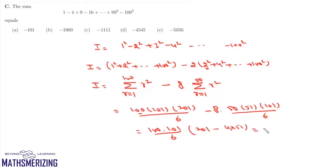So this value will be 10100 into minus 3 upon 6, and it will be minus 5050, which is your option number e.